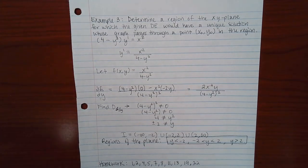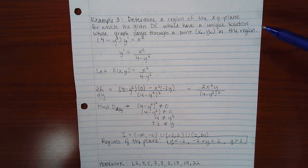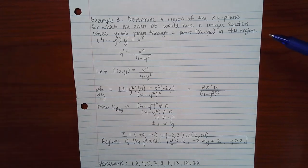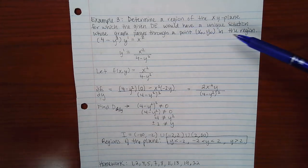So here it says, determine a region of the XY plane for which the given DE would have a unique solution whose graph passes through a point (x naught, y naught) in the region.